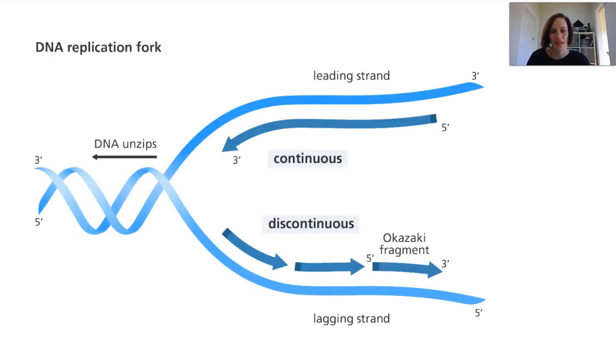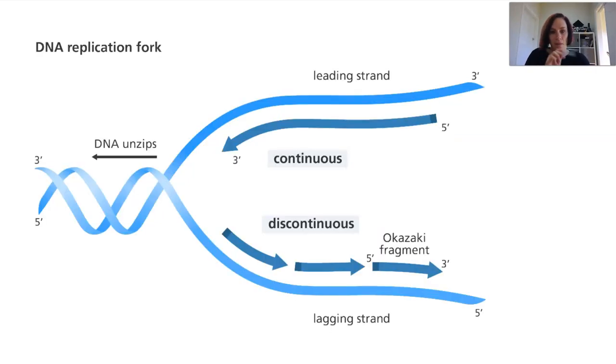So when you put it all together, you can see that the top strand here is building five prime to three prime with the way that the DNA is unzipping. While the strand at the bottom, the lagging strand, it's creating those Okazaki fragments five prime to three prime as well, but it's going in the opposite direction. So the first one will be created here and then it would move back to the left with those other ones. So it sort of plays catch up in short little bursts.